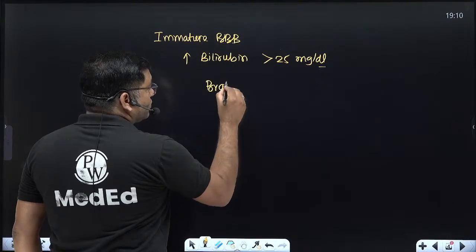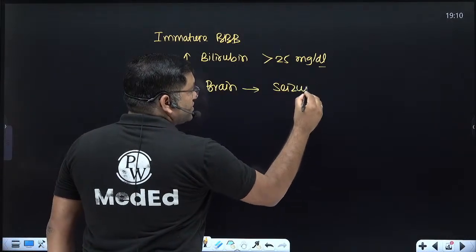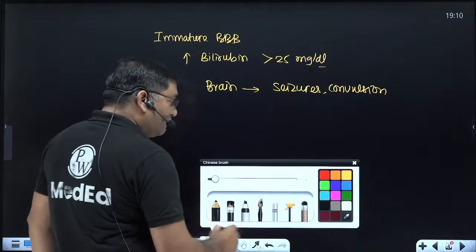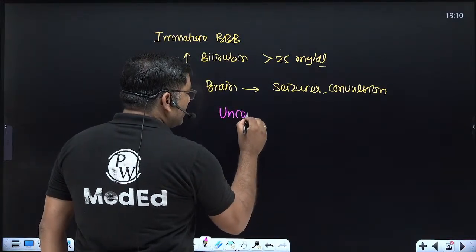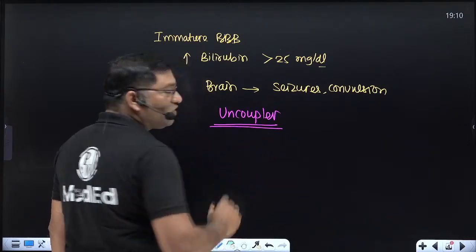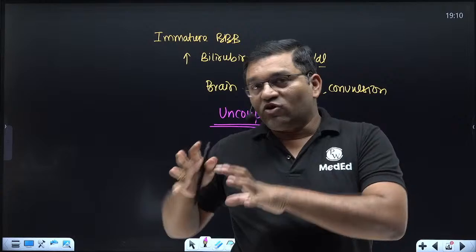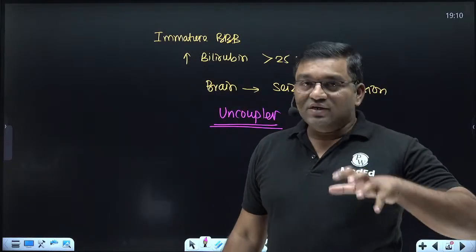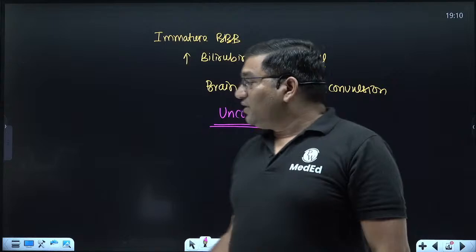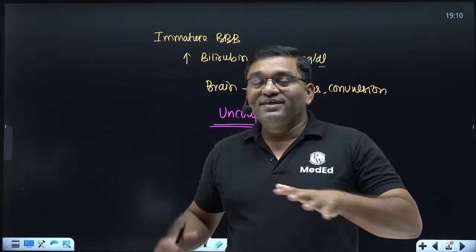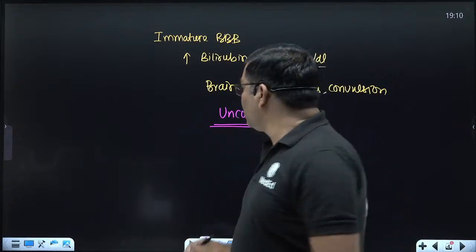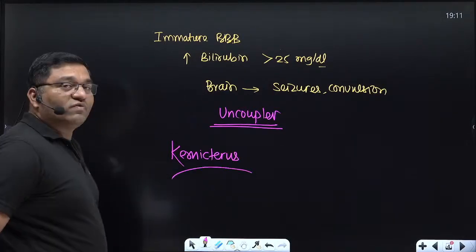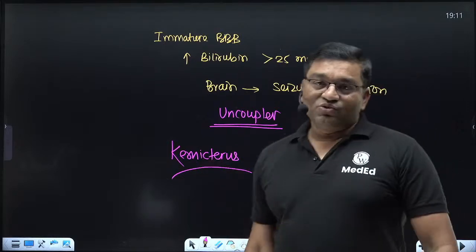Unconjugated bilirubin causes toxic manifestations in the form of seizures and convulsions. This is because unconjugated bilirubin is an uncoupler — it is a physiological uncoupler that de-links the electron transport chain from oxidative phosphorylation. So no ATP synthesis occurs, only heat generation. This damages the brain and causes neurological manifestations in the neonate, which is known as kernicterus. This condition occurs when bilirubin level goes above 20 or 25 mg per deciliter.